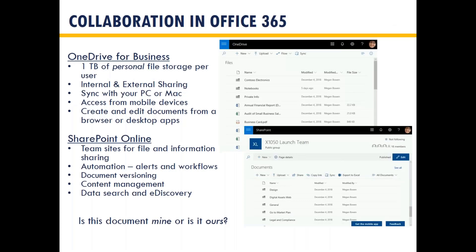We'll take a deeper dive into OneDrive for Business and SharePoint Online. They have the same look and feel because they're really built on the same platform. OneDrive for Business includes up to a terabyte of personal file storage per user. It allows users to share files internally and externally. There is a OneDrive for Business app you can install on Mac or PC, and it will synchronize your content locally to your device. If you're out in the field with no internet access, as soon as you reconnect, it will sync back into your OneDrive.